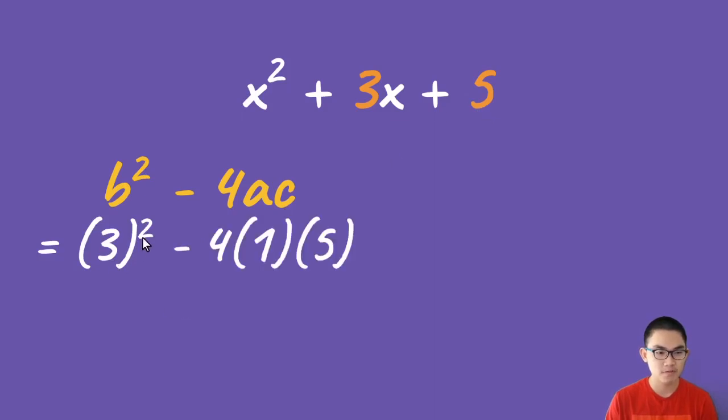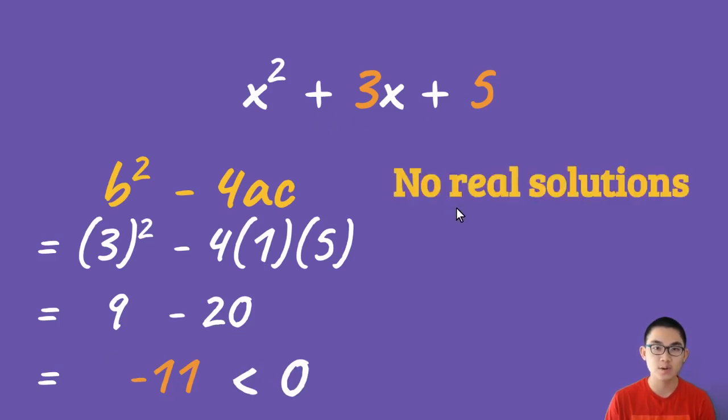And so 3 to the power of 2 gives you 9. Negative 4 times 1 times 5 gives you negative 20. And so this is 9 minus 20, which is just negative 11. And so because this is smaller than 0, we know that this function has no real solutions.